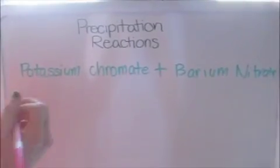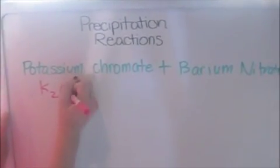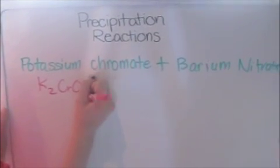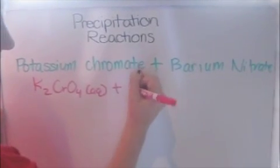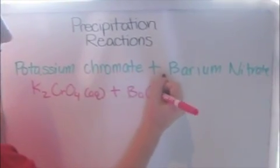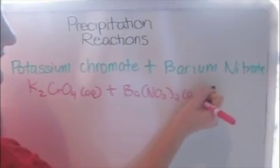We will start by writing the reactants. Potassium chromate, K2CrO4 aqueous, plus barium nitrate, Ba(NO3)2 aqueous.